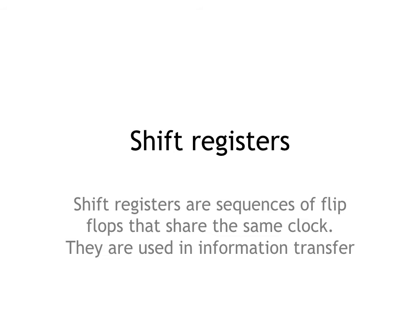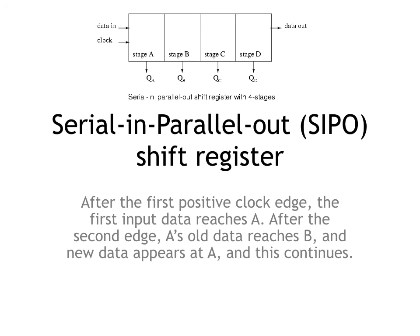One more application of D flip-flop is shift registers. Shift registers are sequences of flip-flops that share the same clock. They are used in information transfer and can store multiple bits of information. There are four types of shift registers, one of which is the serial-in parallel-out shift register. At the first positive clock edge, the first input data reaches A. After the second edge, the data formerly at A gets to B and new data appears at A. After the third edge, B's data gets to C, A's data gets to B, and this continues.